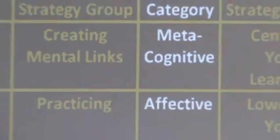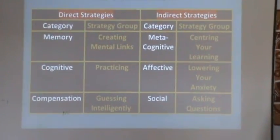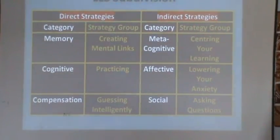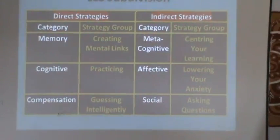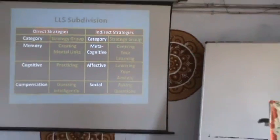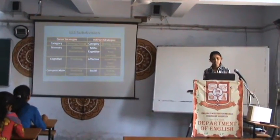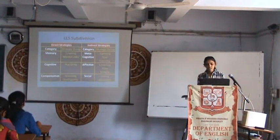This is the subdivision of Language Learning Strategies. There are two main groups: direct and indirect strategies. In Direct Strategies, there are three types: Memory, Cognitive, and Compensation Strategies. In Indirect Strategies, there are three groups: Meta-Cognitive Strategies, Affective Strategies, and Social Strategies.